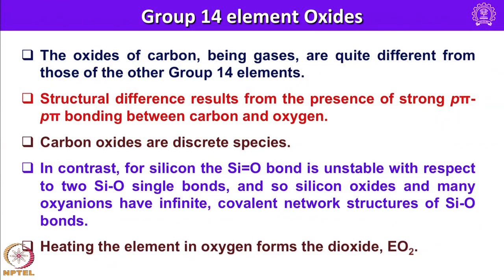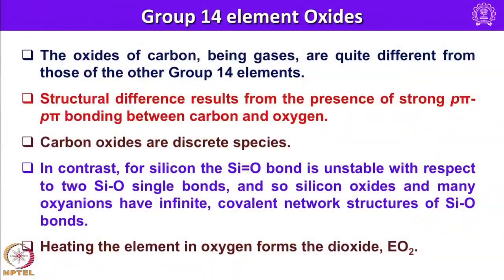With this, let us move on to the oxides of group 14 elements. The oxides of carbon, being gases, are quite different from those of the other group 14 elements. The structural differences result from the presence of strong p-pi p-pi bonding between carbon and oxygen. Carbon oxides are all discrete species, whereas silicon does not form Si=O double bonds — it is unstable with respect to two Si–O single bonds. Silicon oxides and many oxyanions have infinite covalent network structures of Si–O bonds. Heating silicon in oxygen forms the dioxide, SiO2.